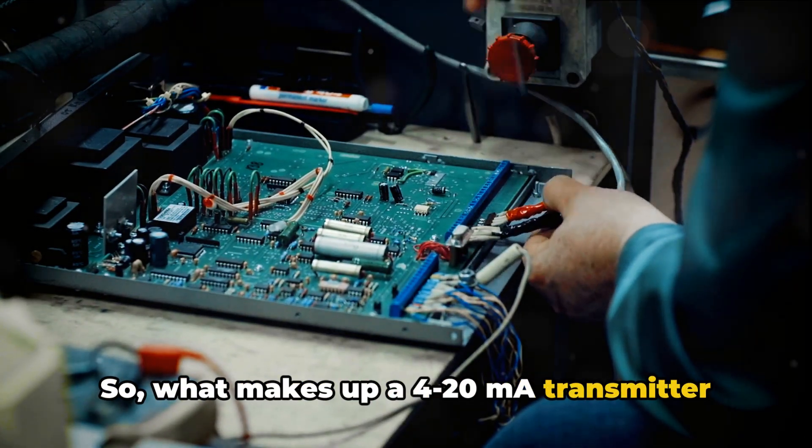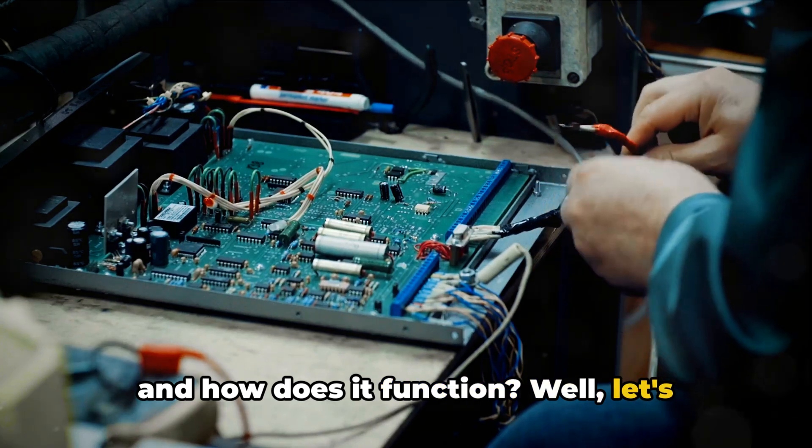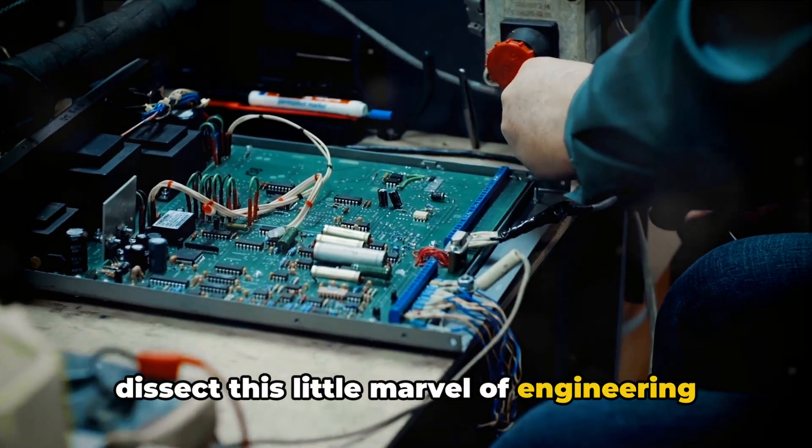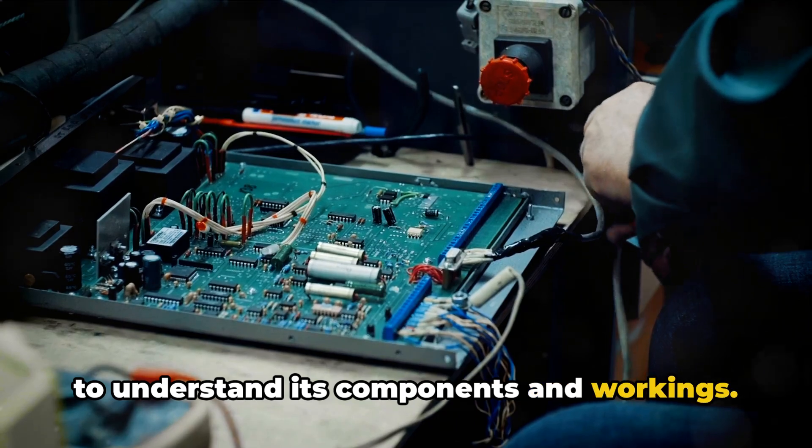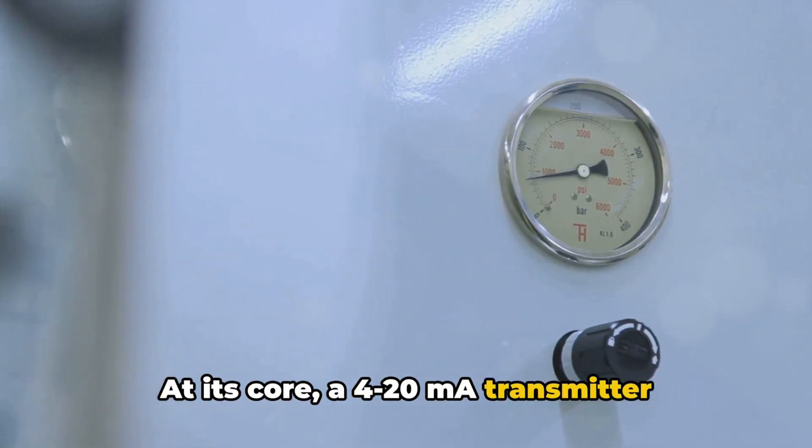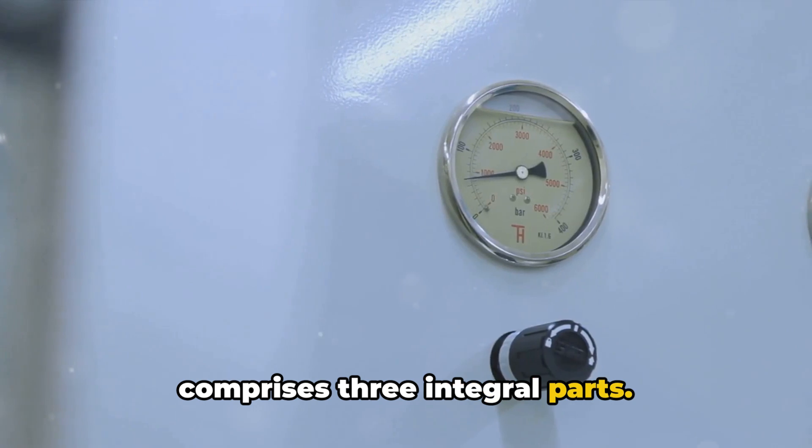What makes up a 4-20mA transmitter and how does it function? Let's dissect this little marvel of engineering to understand its components and workings. At its core, a 4-20mA transmitter comprises three integral parts.